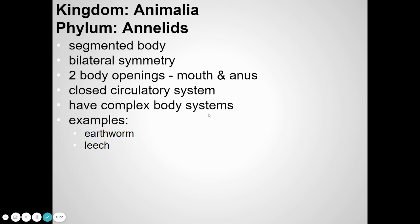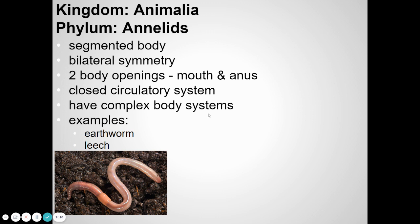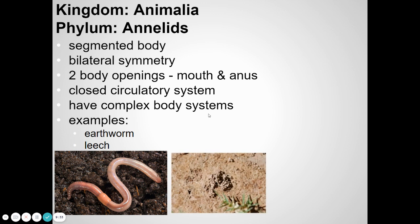Annelids are segmented worms, which includes earthworms. Earthworms swallow soil, digest nutrients and tiny organisms from it, and the waste comes out. Those little piles that look like dirt on top of the soil — called earthworm castings — are actually earthworm poop. They're really good for the soil. You can actually buy earthworms online; they'll be sent to you in a bag and you can put them in your garden because they help aerate the soil and break down organic material.